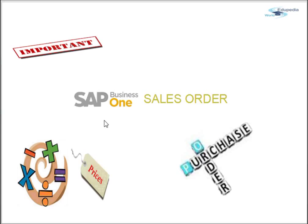In another case, in trading — which means you buy goods and sell them at a higher price — you receive a sales order from a customer. What you can do is directly copy that sales order to your purchase order and then fulfill the customer requirement. Also, you can change the sales order: you can change the quantities, update prices, discounts, and so on, after you have posted it.